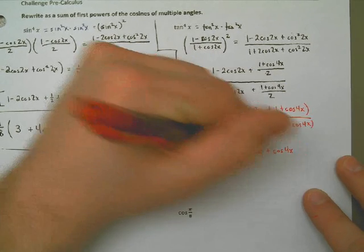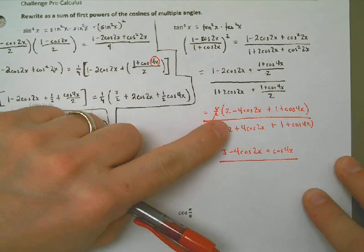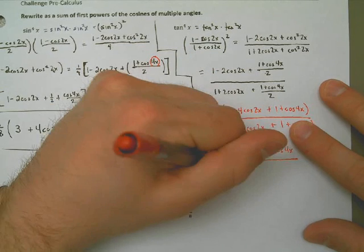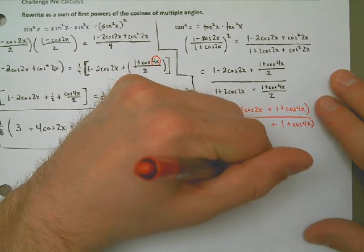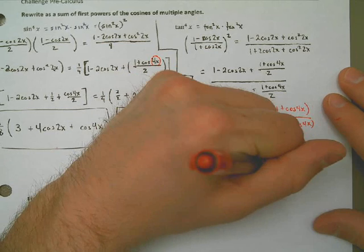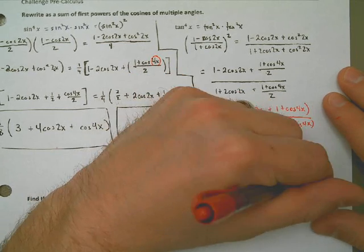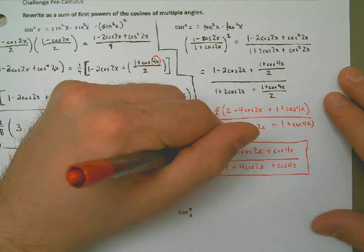On the bottom, I have once again 2 plus 1, that's 3. This time it's plus 4 cosine of 2x plus cosine of 4x. And that is as simple as it gets.